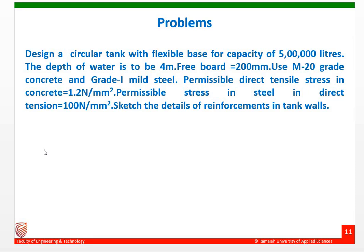We need to design a circular tank with a flexible base for a capacity of 5 lakh liters. The depth of water is given as 4 meters, and the freeboard is 200 mm. We need to use M20 grade of concrete and Grade 1 mild steel. The permissible direct tensile stress in concrete is 1.2 N/mm², the permissible stress in steel in direct tension is 100 N/mm², and the modular ratio M is 13. We also need to sketch the reinforcement details.